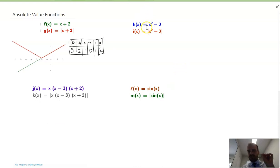So, you might want to take a moment to think about what does the quadratic x squared minus 3 look like? And then, what does the absolute value of x squared minus 3 look like?